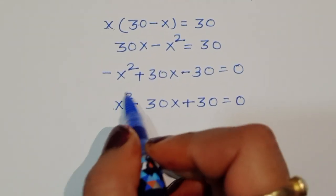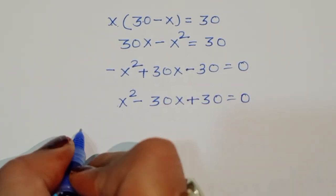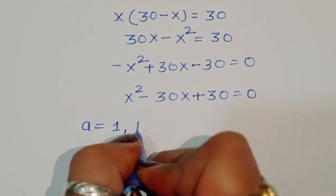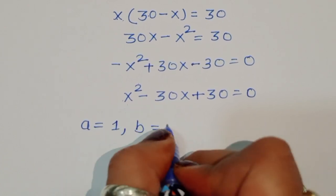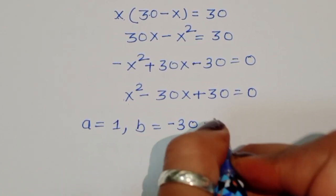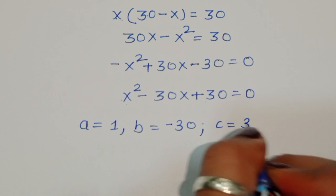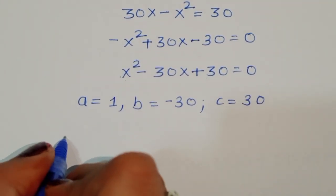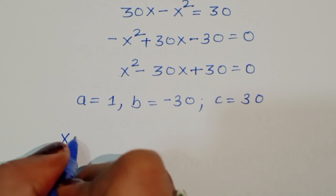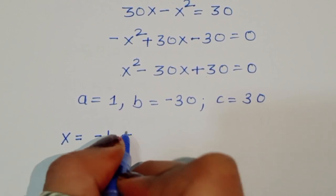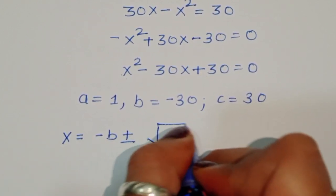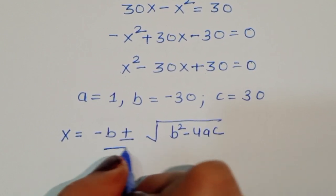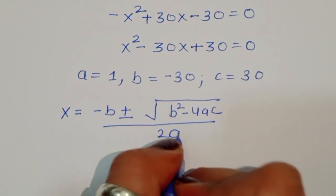Now we have a quadratic equation. The coefficient of x squared is a equals 1, b equals minus 30, and c equals 30. We will use the quadratic formula: x equals minus b plus or minus square root of b squared minus 4ac, all divided by 2a.